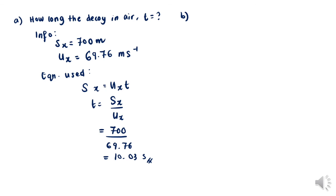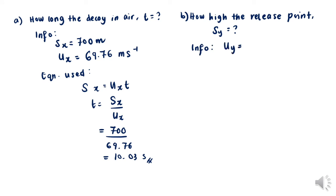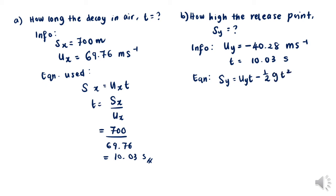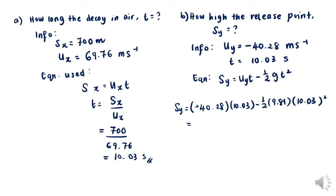For part b, we find the height of the release point, which is our sy. With uy equals negative 40.2 meters per second and t equals 10 seconds, we apply sy equals uy·t minus half·g·t². Substituting all values gives sy equals negative 897.46 meters, where the negative sign refers to the downward direction of displacement.